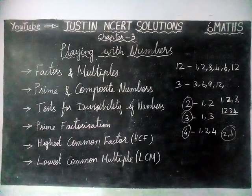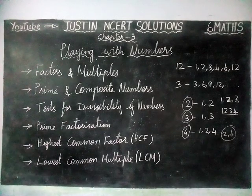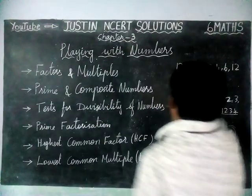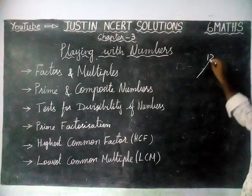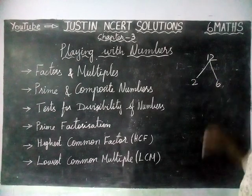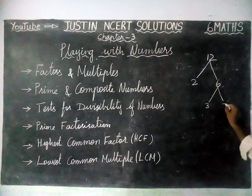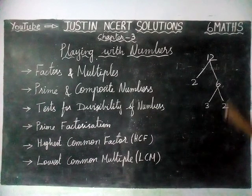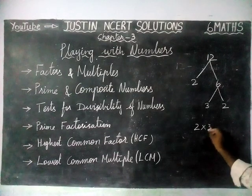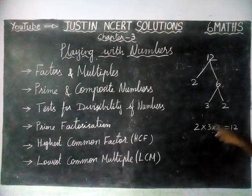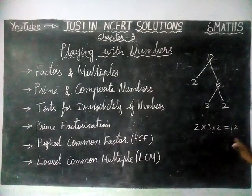Next one, prime factorization. We are going to separate the given number into factors up to the point where all factors are prime numbers. For example, take the number 12. We are going to separate it: 12 can be separated as 2 and 6. 2 is a prime number, but 6 is not a prime number, so we separate further — 3 twos are 6. So, prime factorization of 12 is 2 × 2 × 3 = 12. That is called prime factorization.